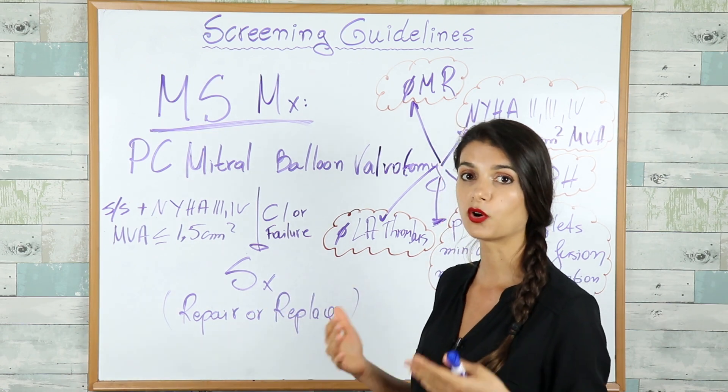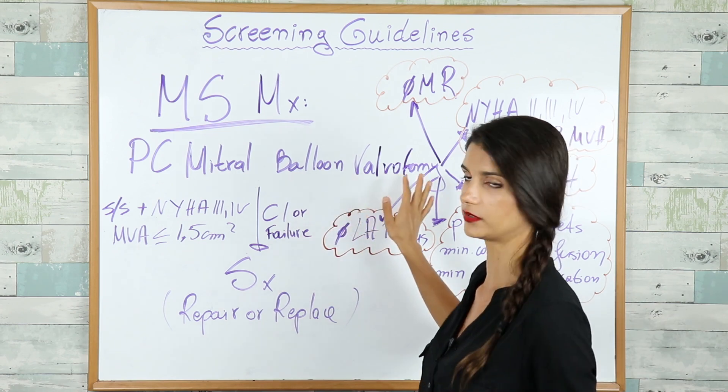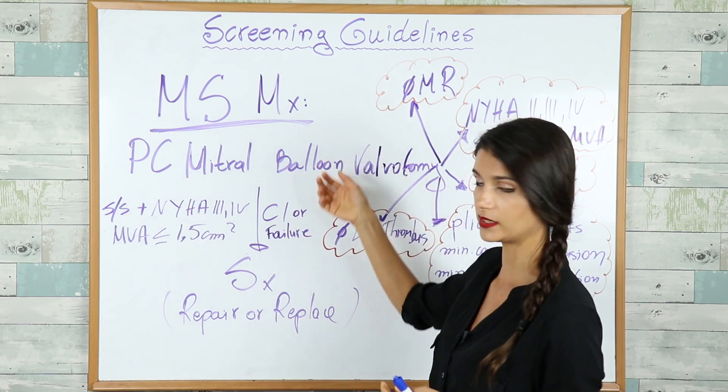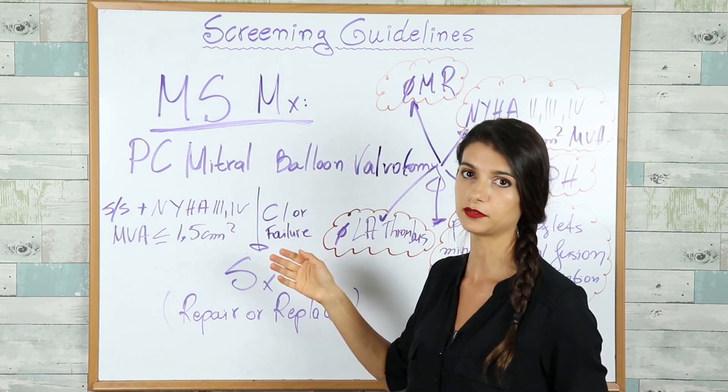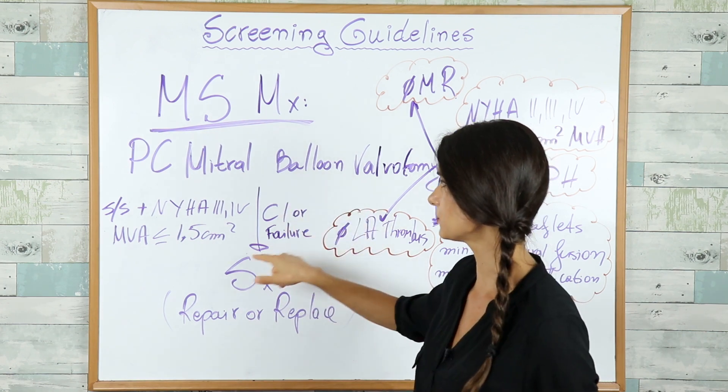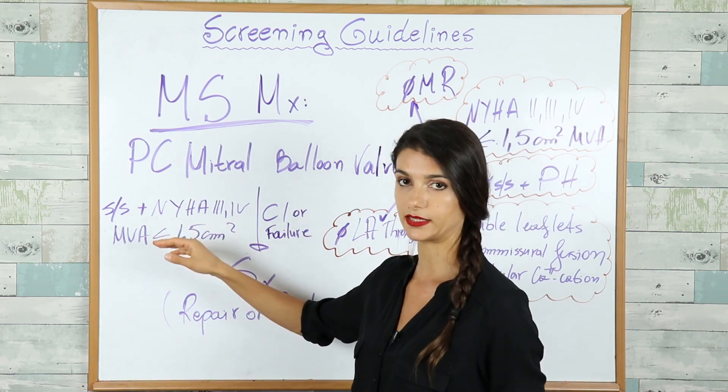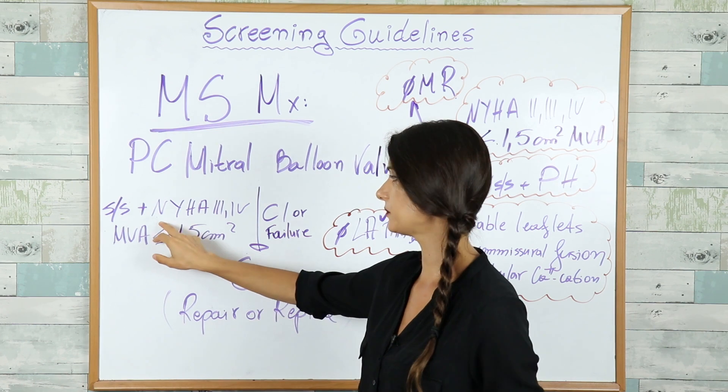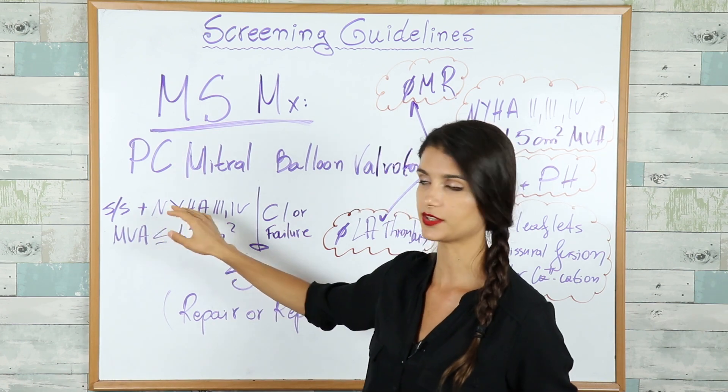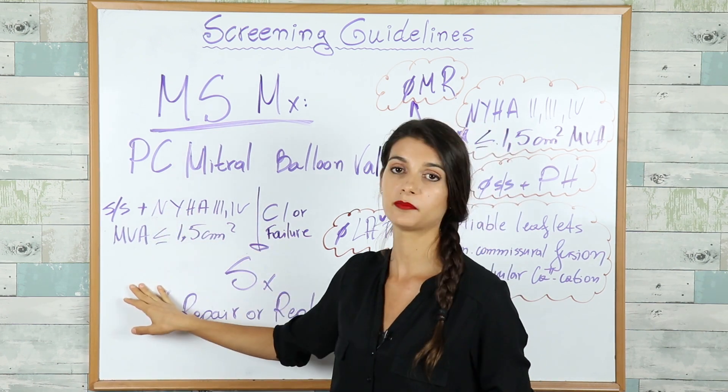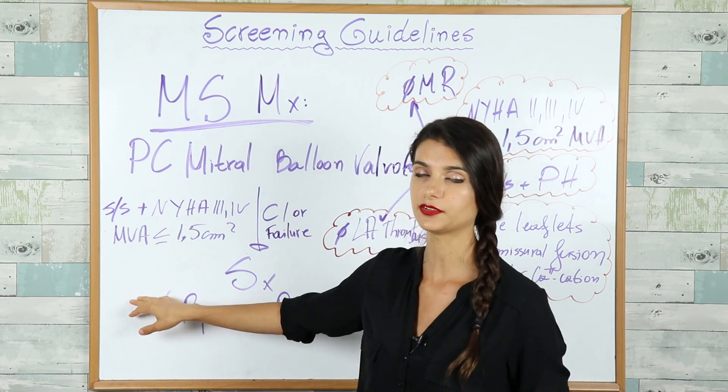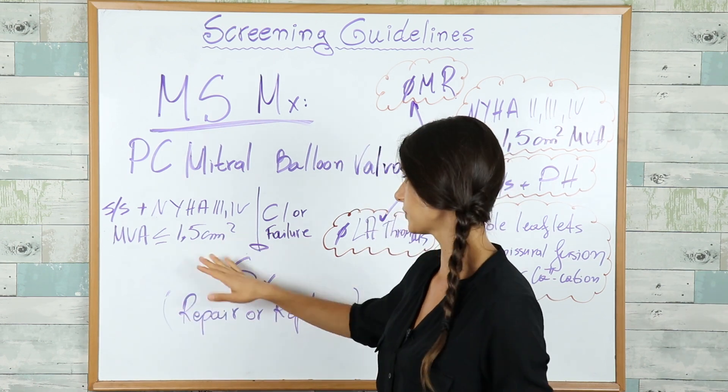When there are contraindications to balloon valvotomy or you have tried balloon valvotomy but it has failed, the patient also has to meet the following criteria. They should be symptomatic in NYHA functional class 3 to 4, and the mitral valve area again has to be less than or equal to 1.5 square centimeters.